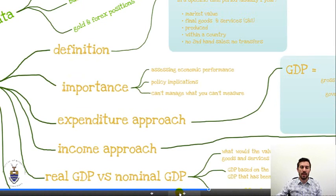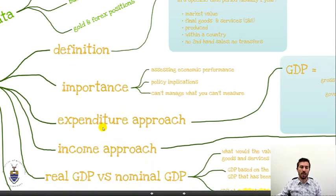We've been looking at GDP, we've defined it and we've seen the importance of it. Now we're going to look at two different ways of measuring GDP: the expenditures approach and the income approach.